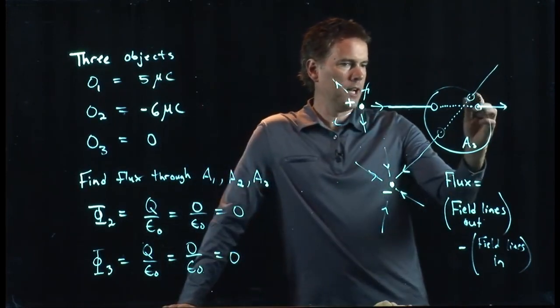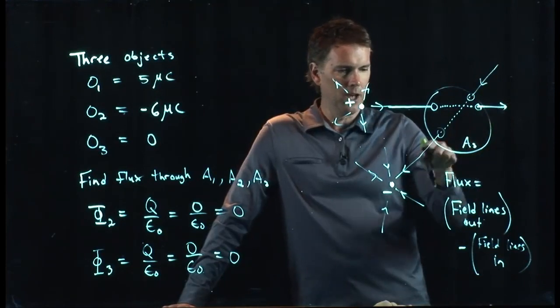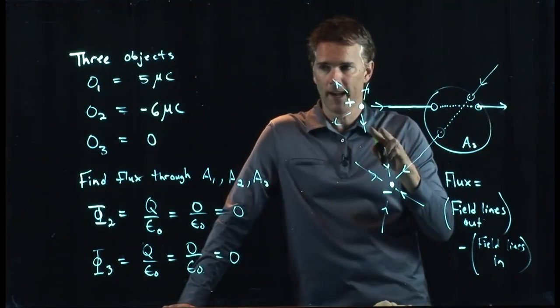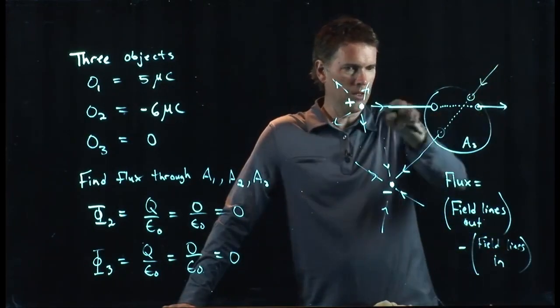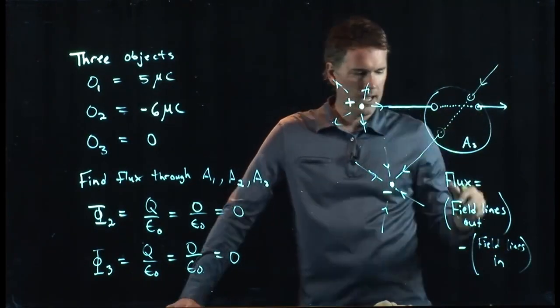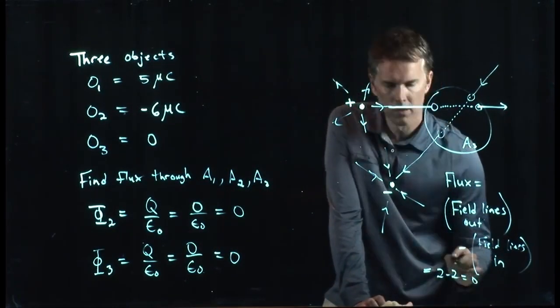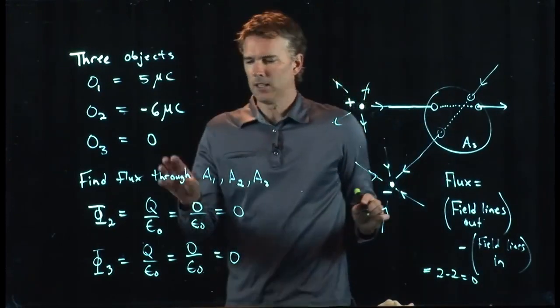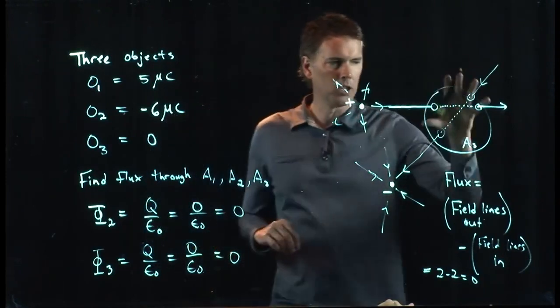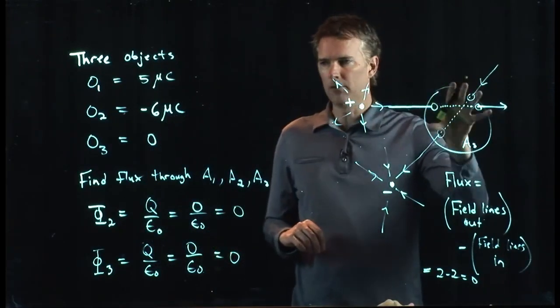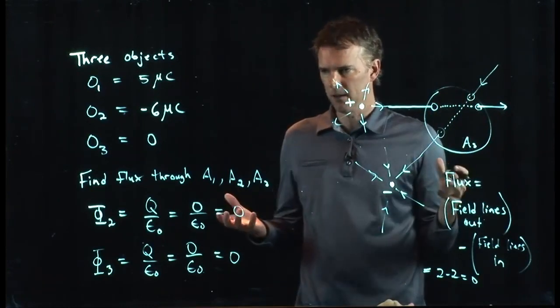So how many field lines are going out? Well, I've got one going out there. I have another going out there. So that's two going out. But I have two field lines going in. That one came in there. This one came in right here. And so this becomes two minus two, which is, of course, zero. And so we're back to this idea that it only depends on the charge enclosed. How much charge is enclosed in your Gaussian surface? That determines how much flux is coming out of your Gaussian surface.